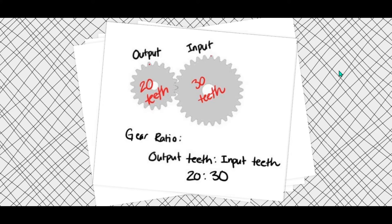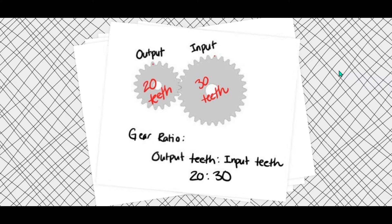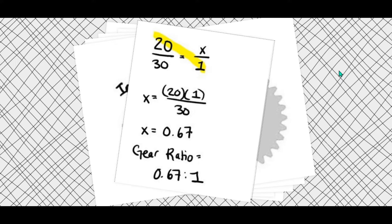Now let's change it up. If I make the 30-tooth gear my input and the 20-tooth gear my output, the gear ratio becomes 20 to 30. Setting up the ratio as a fraction — 20 over 30 equals X over 1 — X equals 20 times 1 divided by 30, which is approximately 0.67. So the gear ratio in this second scenario is 0.67 to 1.